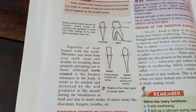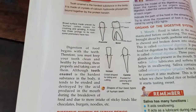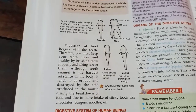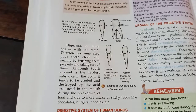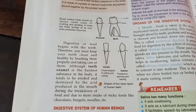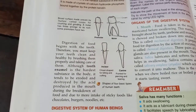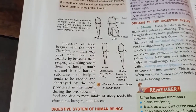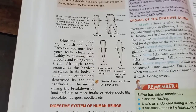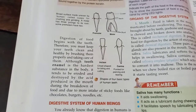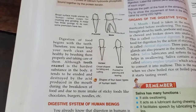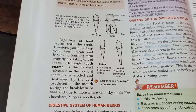Welcome back students. In this session, this is your assignment number two of the chapter: The Digestive System. As I told you in our earlier assignment, there are four types of teeth: incisors, canines, premolars, and molars.